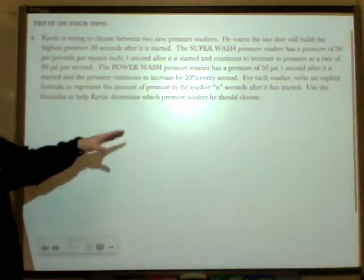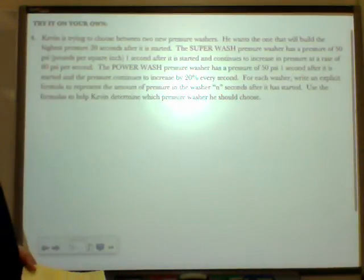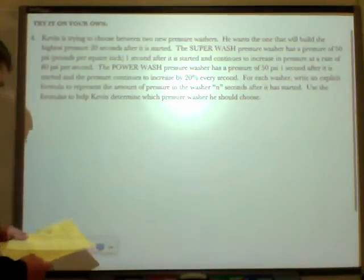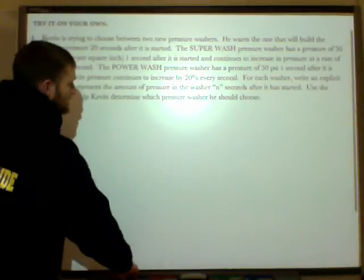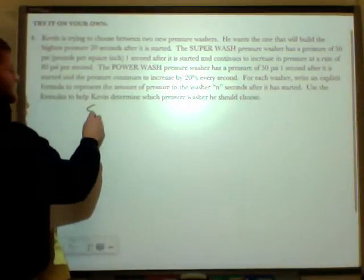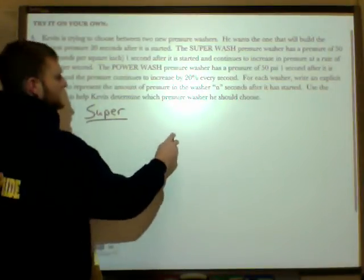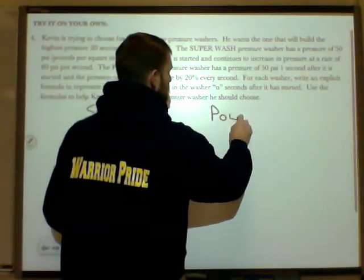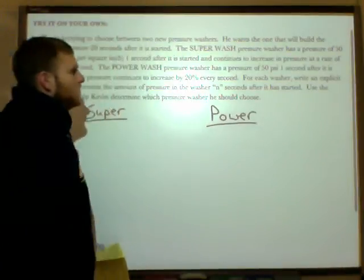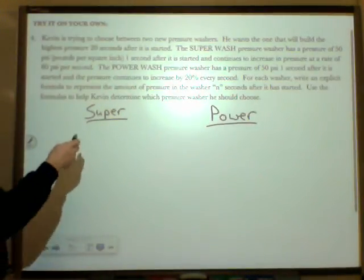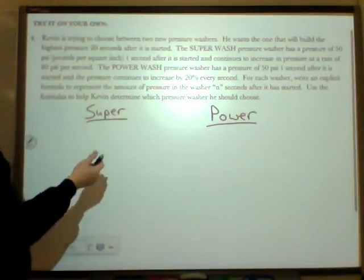And they were trying to set you up with essentially an arithmetic and a geometric sequence here. So they had you set up with the Superwash and the Powerwash. They set it up in a way that the Super was the arithmetic and the Power was the geometric. And they both had the initial pressure of 50 psi.